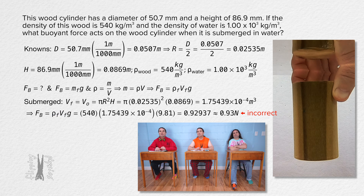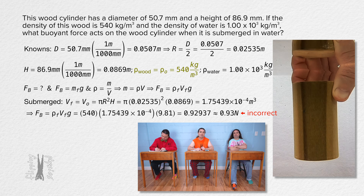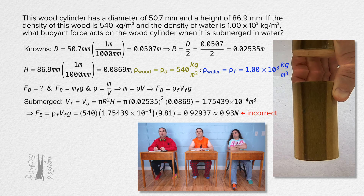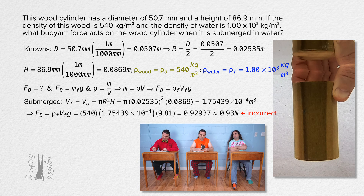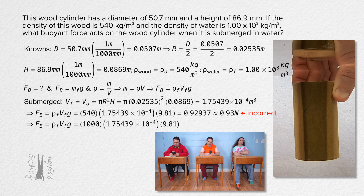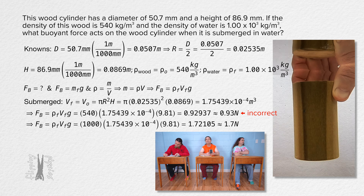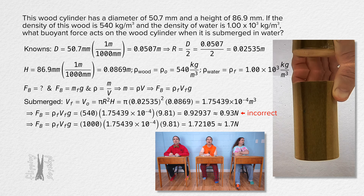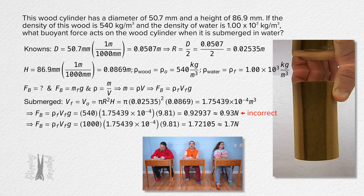Let's go back to the knowns and specifically identify the density of the wood as the density of the object and the density of the water as the density of the fluid displaced by the object. That should help, right Mr. P? I agree, that should help. So that means the buoyant force equals 1000 times 1.75439 times 10 to the negative 4 times 9.81, or 1.72105, roughly 1.7 Newtons. Great, thank you.